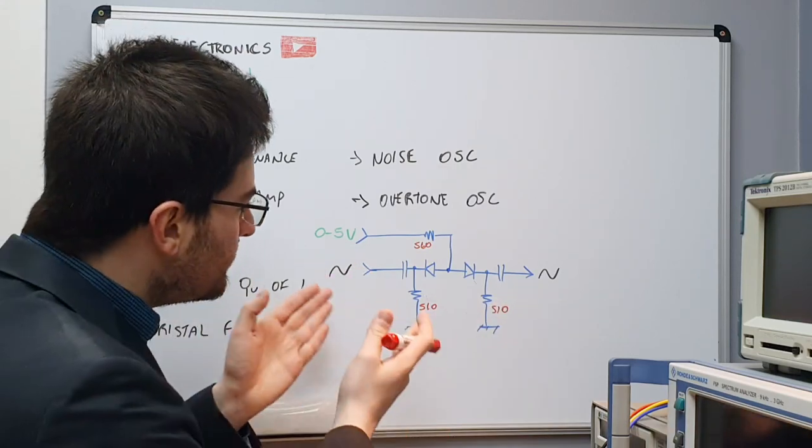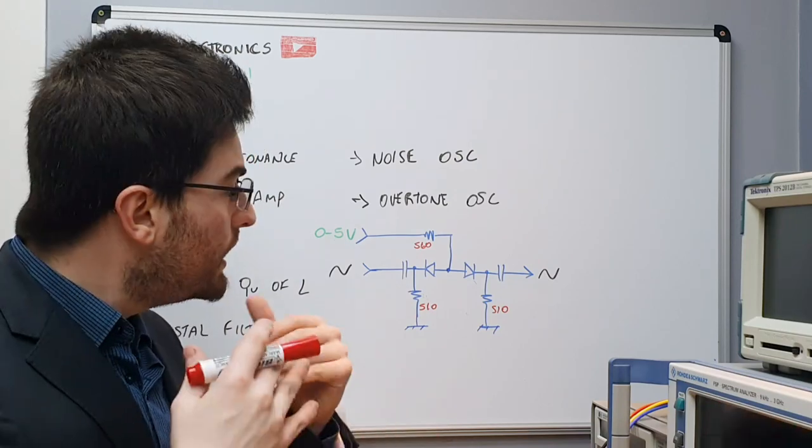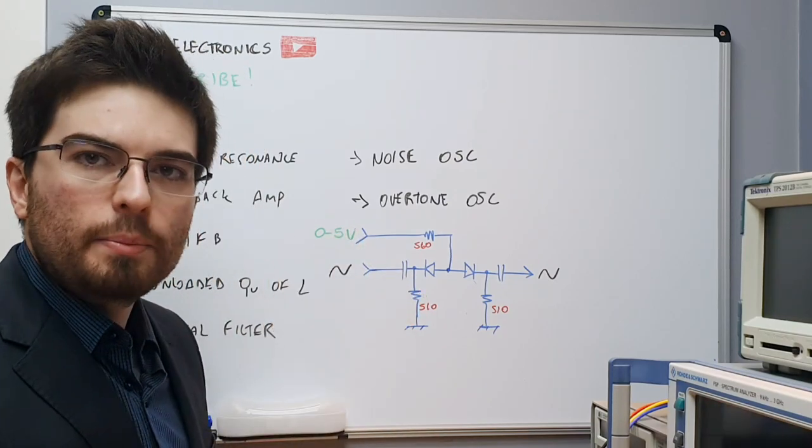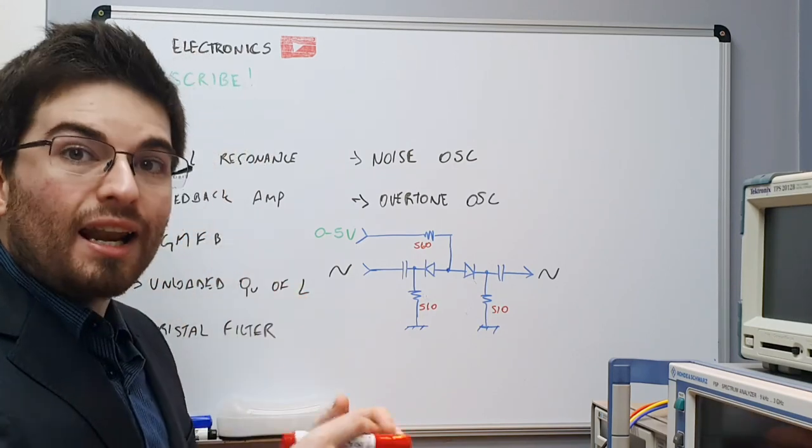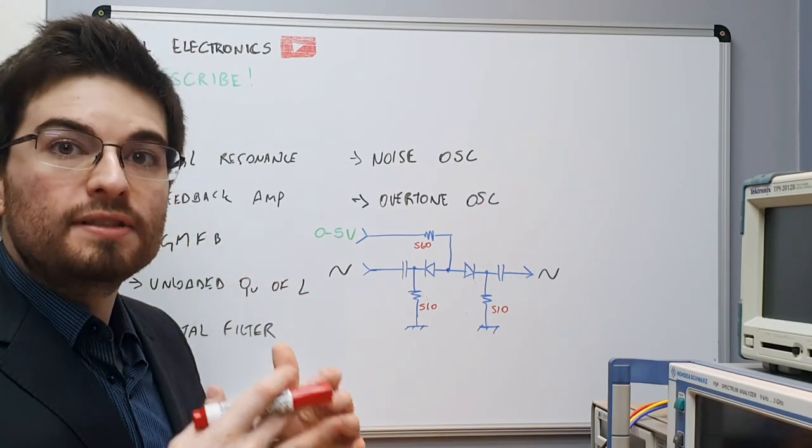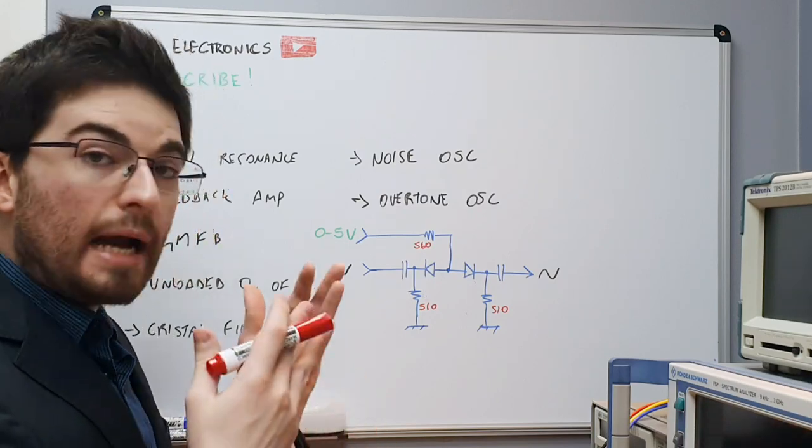Looking at this diagram here, I started to think if we could use a transistor in the place of the diode, because when we look to a transistor from a large signal perspective, the transistor looks like two diodes.